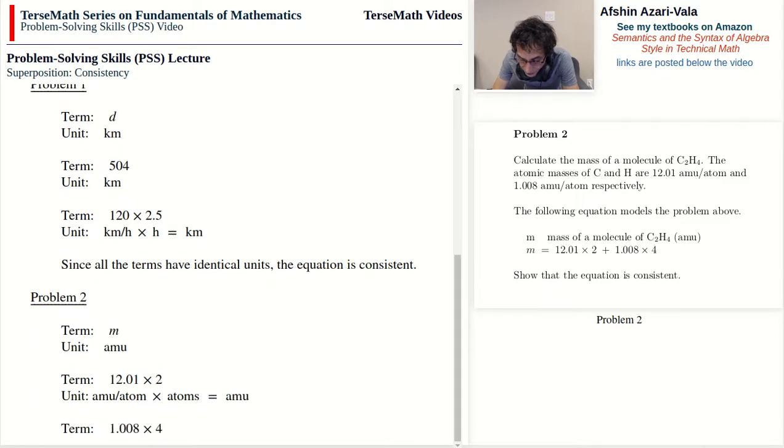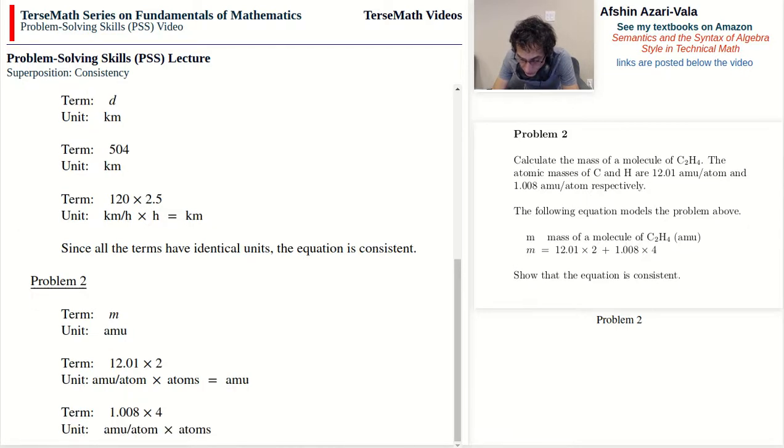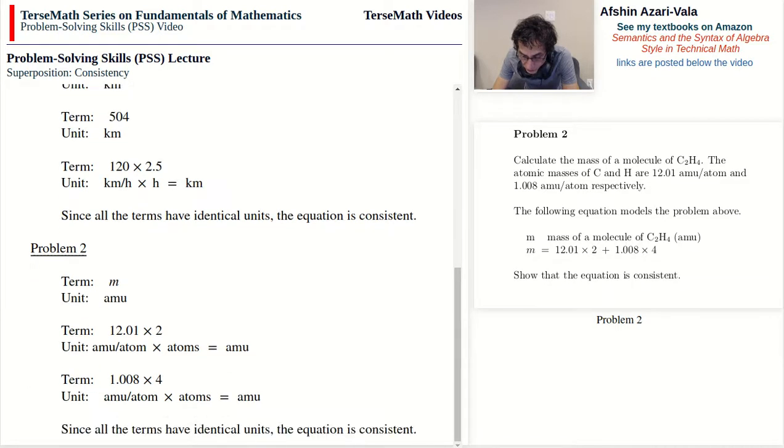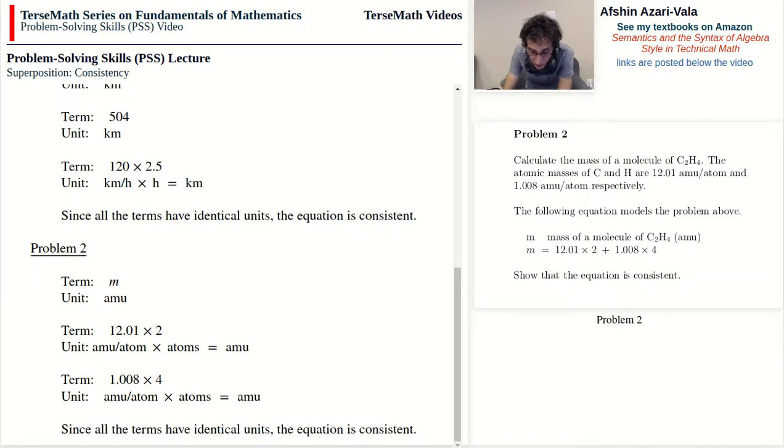The third term is 1.008 times 4, and the units again for 1.008: amu per atom, which is what we see here. And 4 is the number of H atoms in a molecule, so that's times atoms. Again the atoms cancel out and we end up with amu. And now we can say that since all the terms have identical units, the equation is consistent.